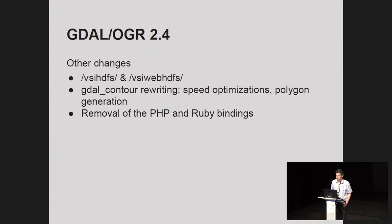The contour utility also received a new mode to generate polygons, whereas previously you could only generate contour lines. On the less welcome side, the PHP and Ruby bindings were removed as they hadn't received any maintenance. If anyone wants to bring them back to life, please join and take the stick.